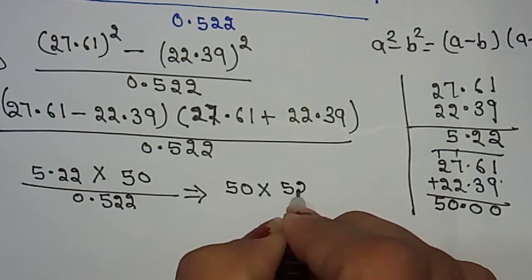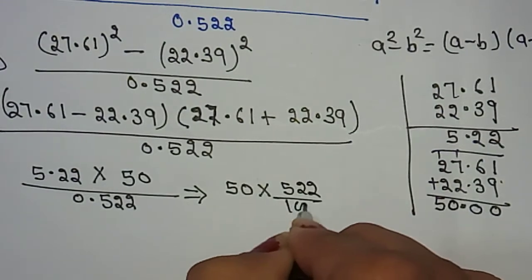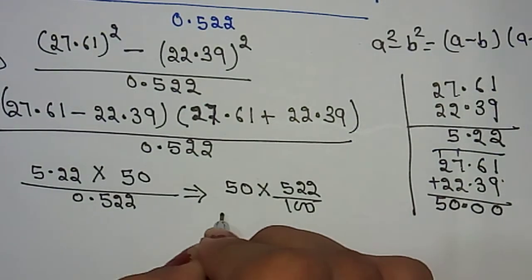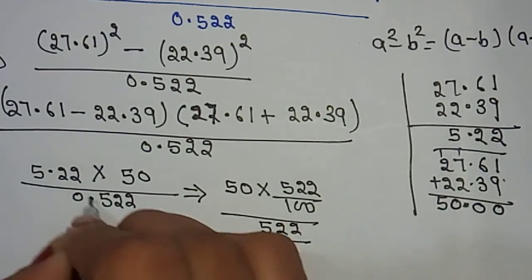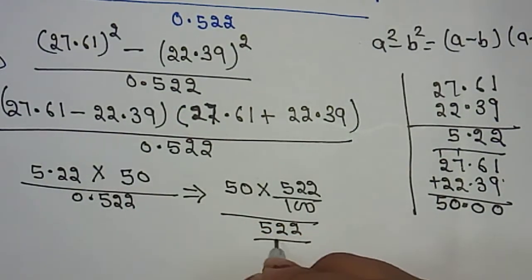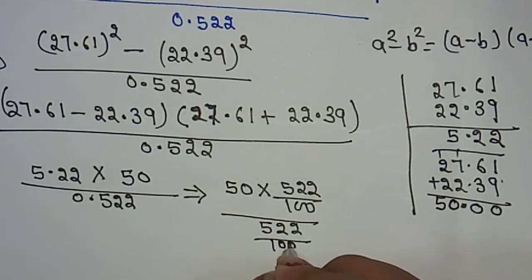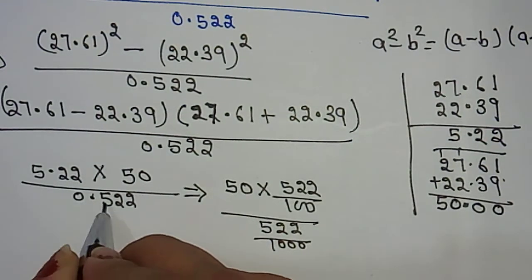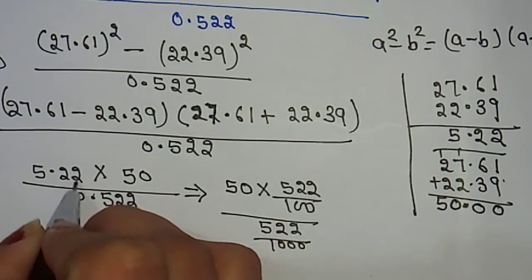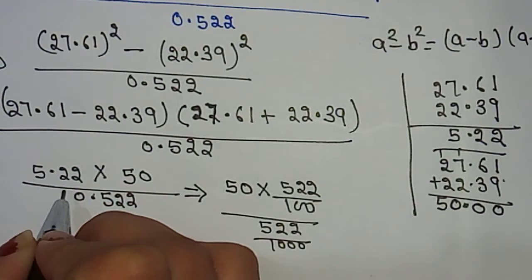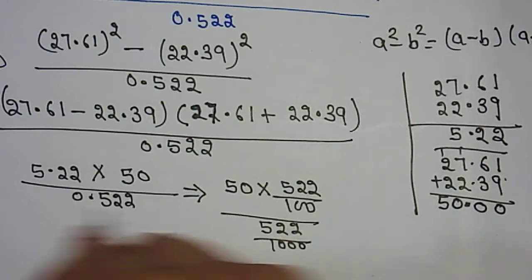So the next step will be 50 × 522 ÷ 100, and 522 ÷ 100. When we remove the decimal of this number, it becomes 1000, right? Because this number has 3 decimal places and this one has 2 decimal places.